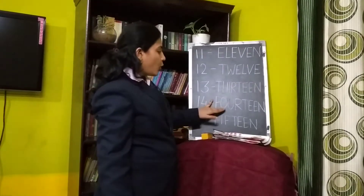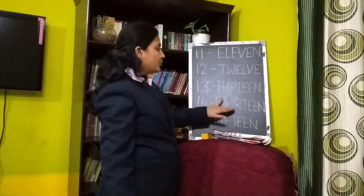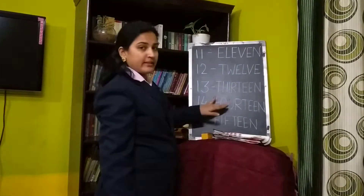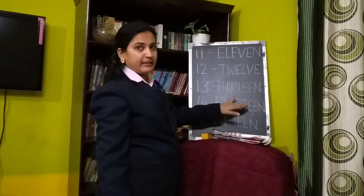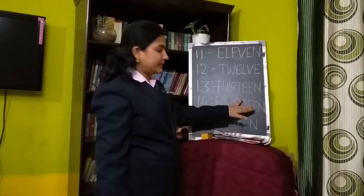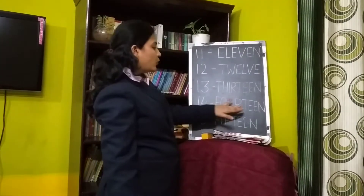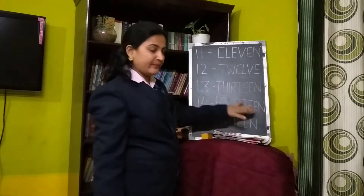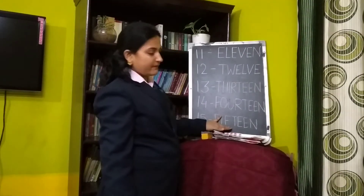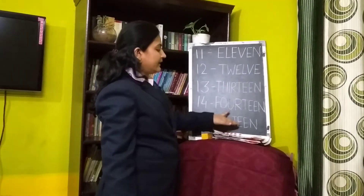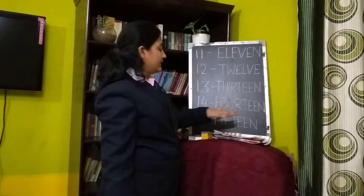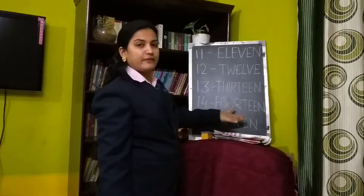F-O-U-R, then T-E-E-N — fourteen, 14. F-I-F, then T-E-E-N — fifteen, 15.